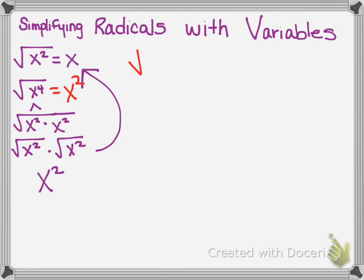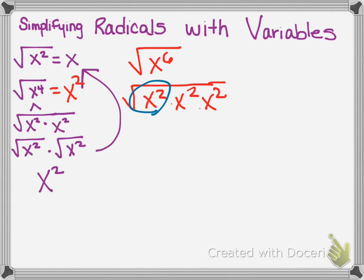So if I ask you to do the square root of x to the sixth, we can write that as x to the second times x to the second times x to the second. So this can simplify to give you x, this simplifies to give you x, and so does that one. So we have a total of three sets of x to the second, which when it comes out of the radical gives me x to the third.